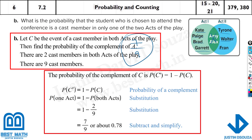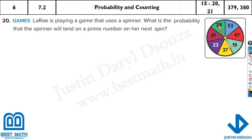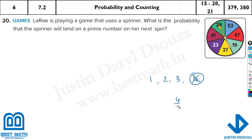The 20th problem is about a spinner. Larry is playing a game that uses a spinner. What is the probability that the spinner will land on a prime number on the next spin? Prime numbers are numbers which can only be divided by themselves and 1. So 1, 2, 3 are prime numbers. Four is not a prime number because four can be divided by two. Five is a prime number. Six is not because six can be divided by three.